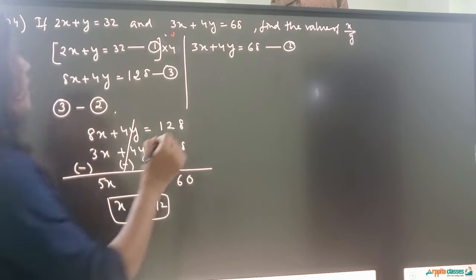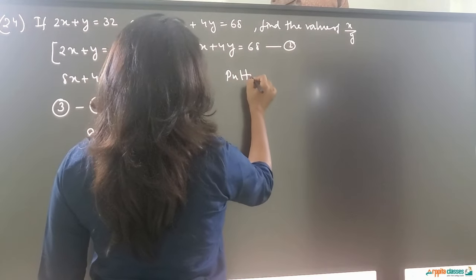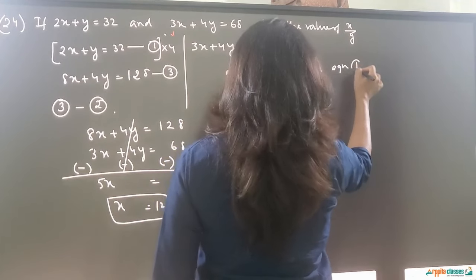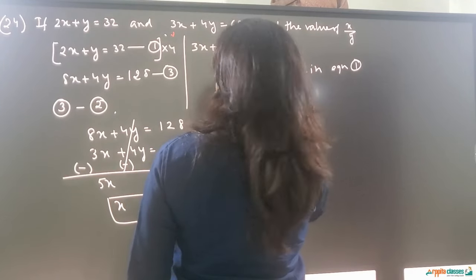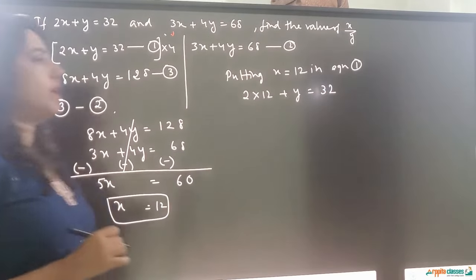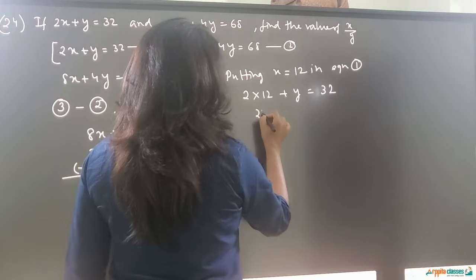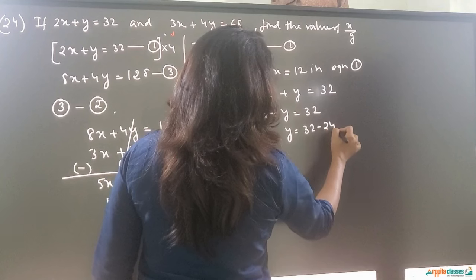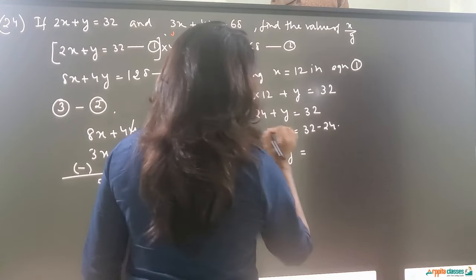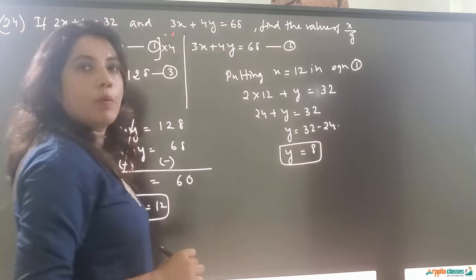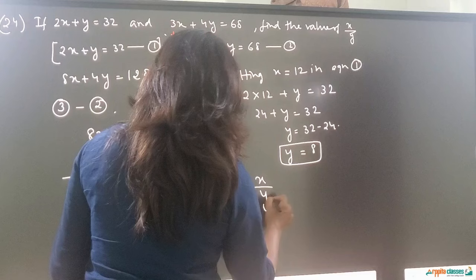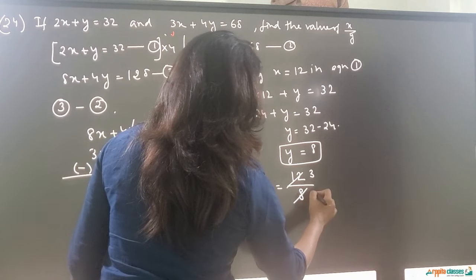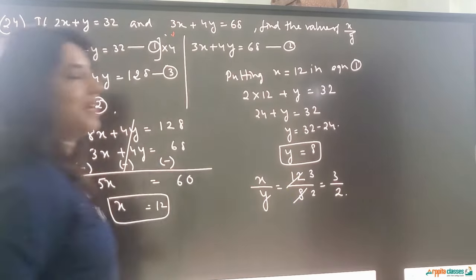Putting x equals 12 into equation 1: 2 times 12 plus y equals 32, so 24 plus y equals 32, giving y equals 8. Now x upon y equals 12 upon 8, which simplifies to 3 upon 2.